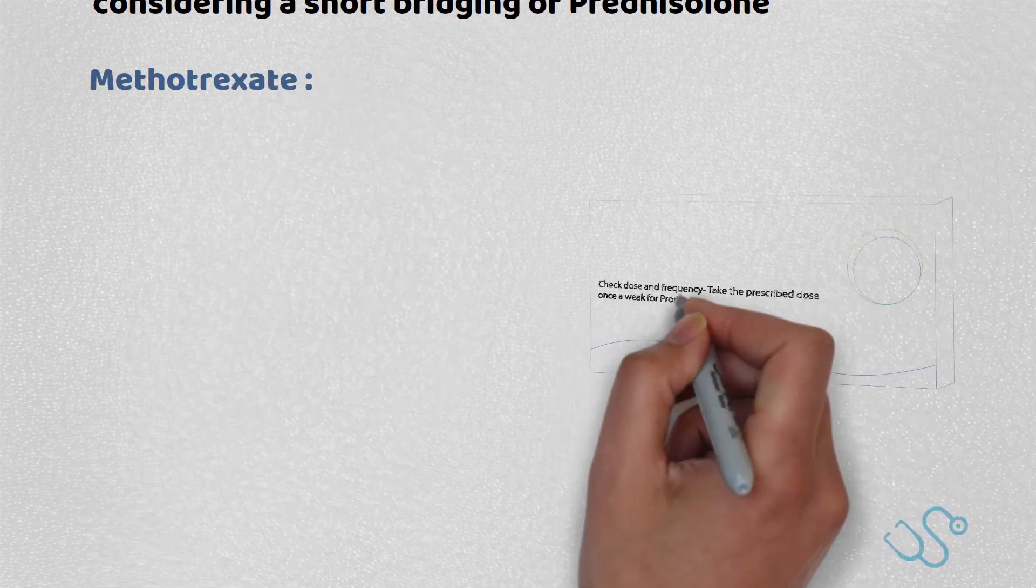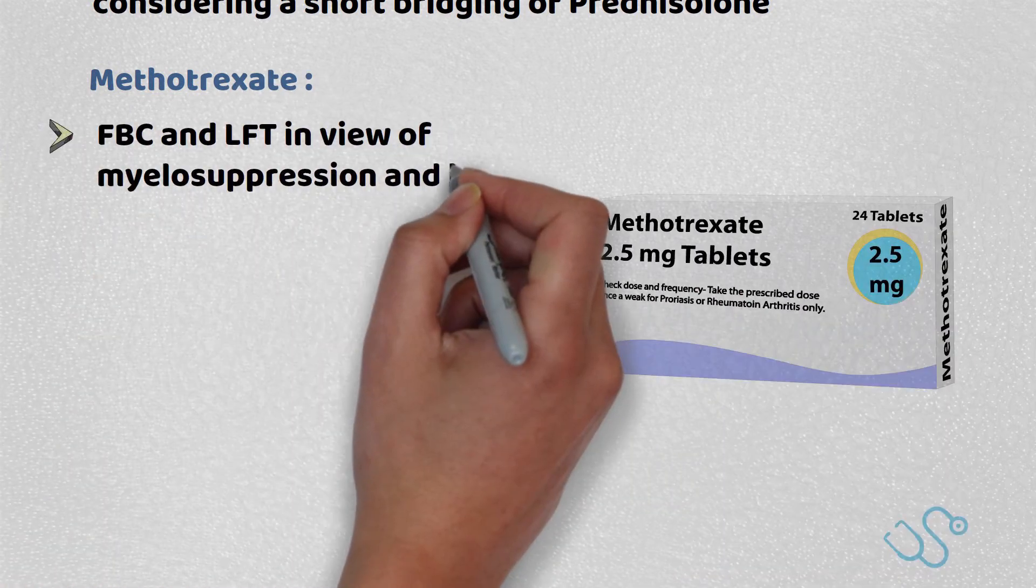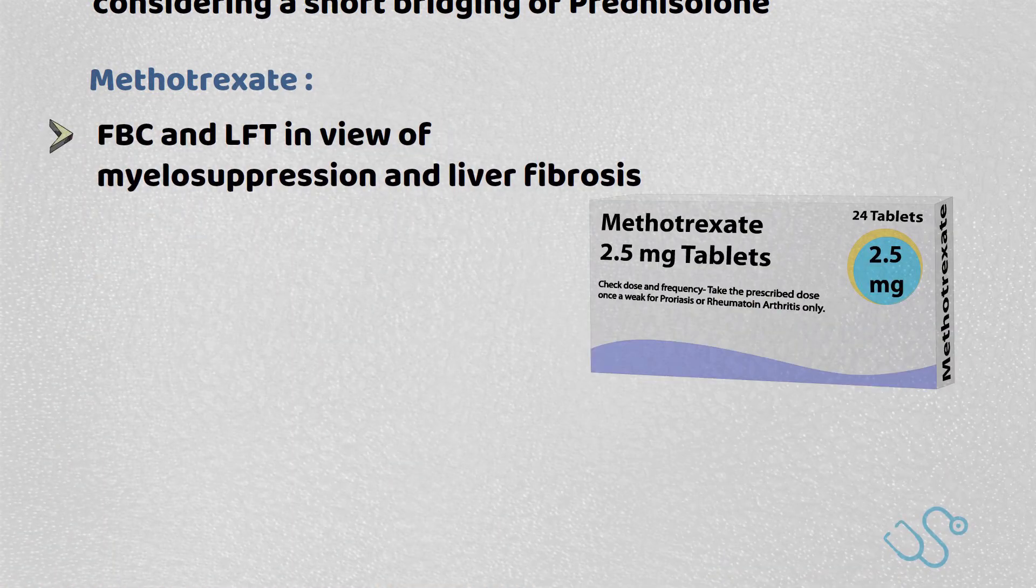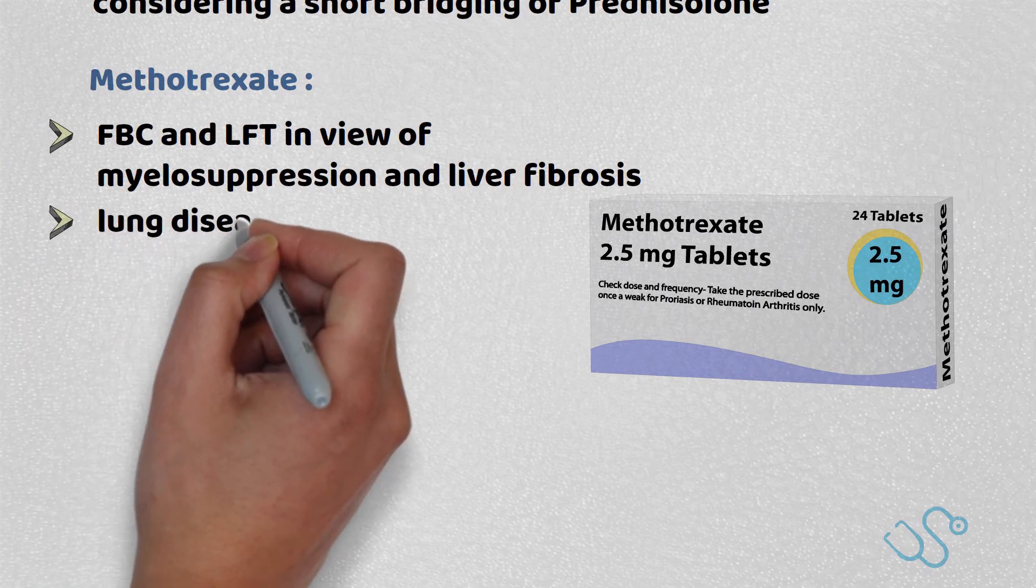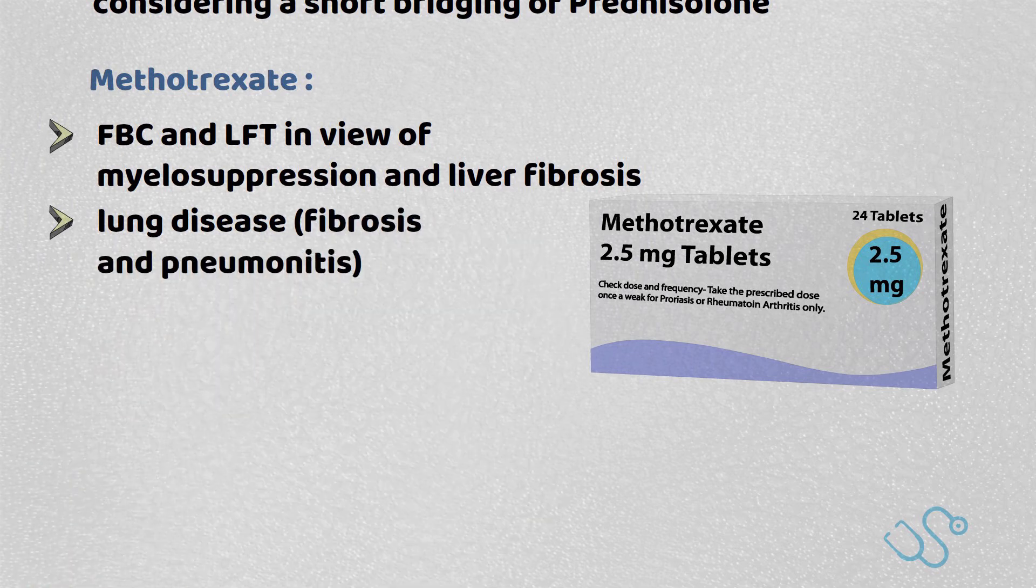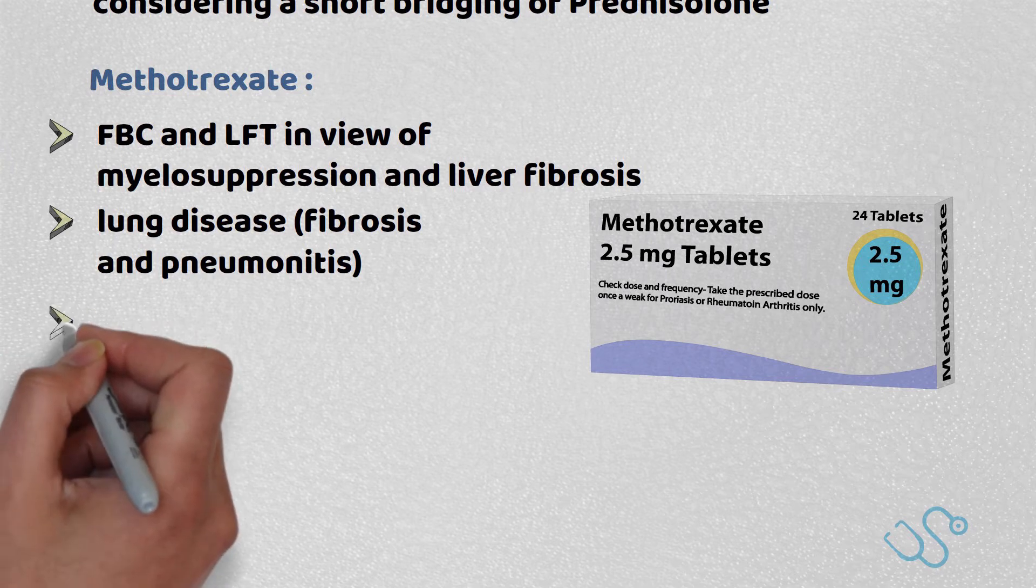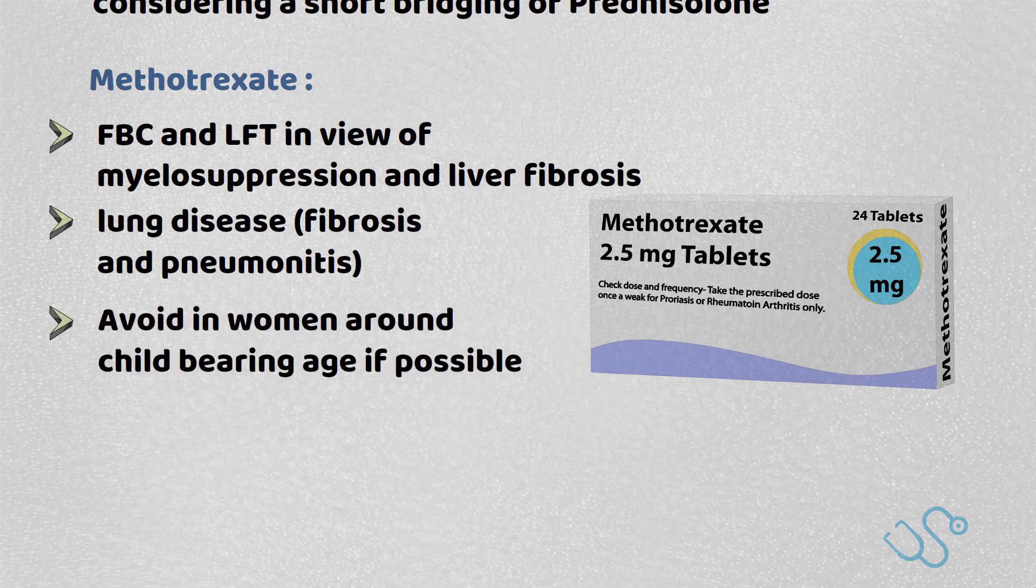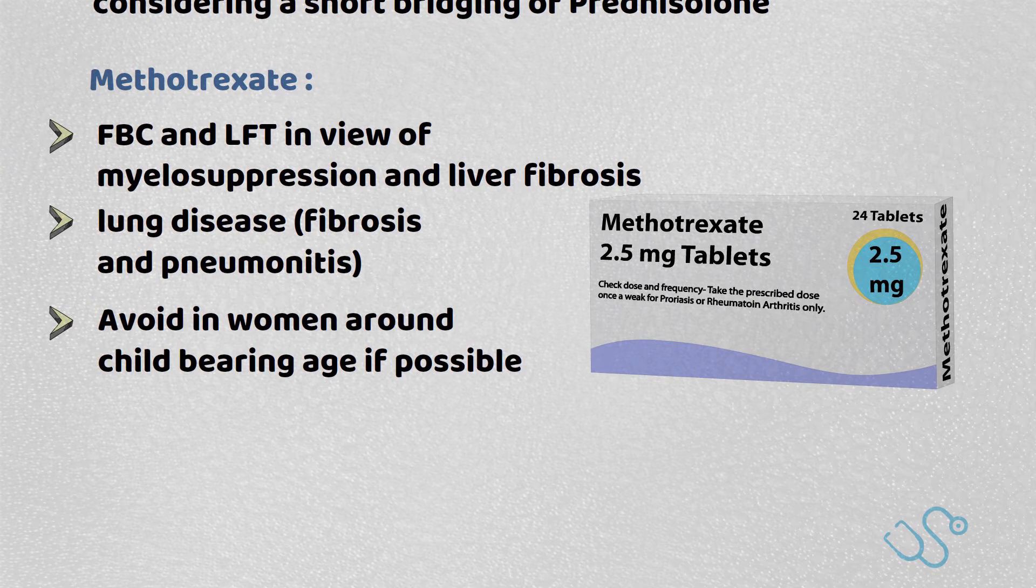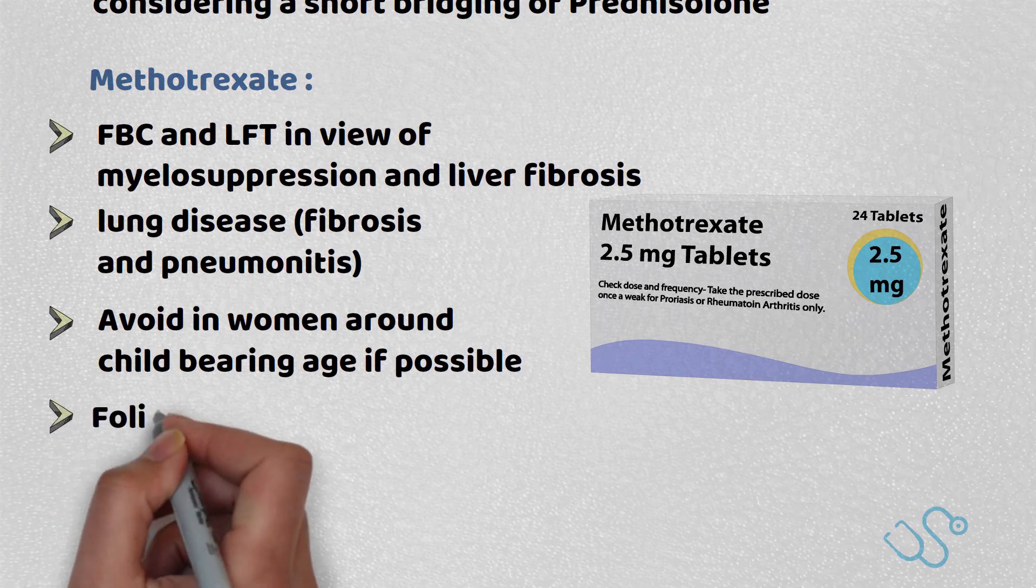The most commonly started DMARD is methotrexate. However, this requires constant monitoring of the full blood count and liver function test in view of side effects which include myelosuppression and liver fibrosis, as well as monitoring for lung disease such as lung fibrosis and pneumonitis. Recommendations are to avoid methotrexate in women around childbearing age if possible, with methotrexate itself taken weekly, usually alongside folic acid.